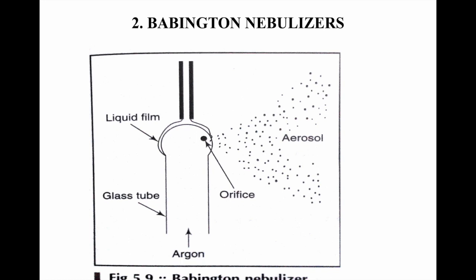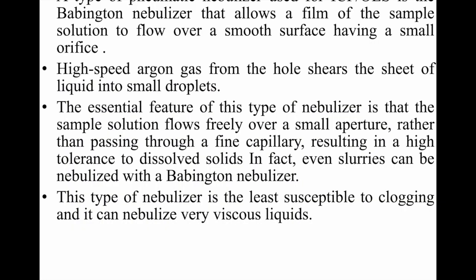The second type of nebulizer is the Babington nebulizer, a type of pneumatic nebulizer used for ICP or OES. It allows a film of the sample solution to flow over a smooth surface having a small orifice. High-speed argon gas from the hole shears the sheet of liquid into small droplets. The sample solution flows freely over a small aperture rather than through a fine capillary, resulting in high tolerance to dissolved solids. Even slurries can be nebulized with a Babington nebulizer. This type is the least susceptible to clogging and can nebulize very viscous liquids.